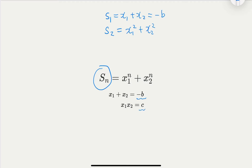Using some algebra, we can write x1² + x2² as (x1 + x2)² minus the extra term 2·x1·x2. Now x1 + x2 is S1, so this is S1² which equals b², minus 2 times x1·x2 which is c. So S2 = b² - 2c.